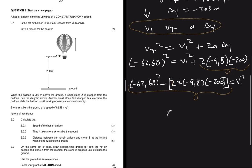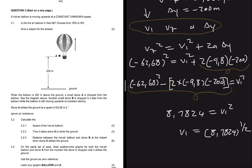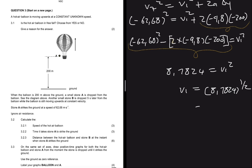The calculator gives me Vi² = 8.7824, so taking the square root: Vi = 8.7824^(1/2) = 2.9635 meters per second. This is the speed of the hot air balloon.